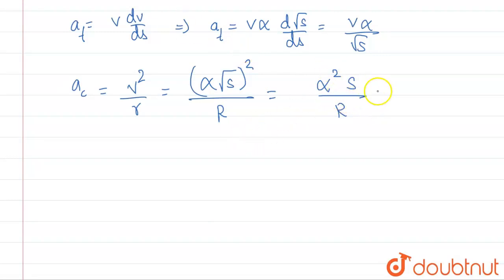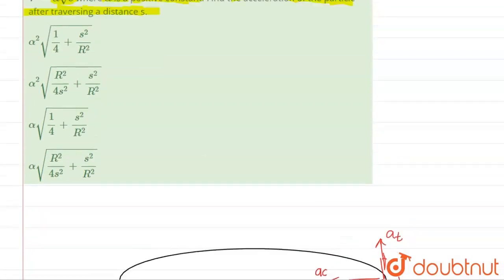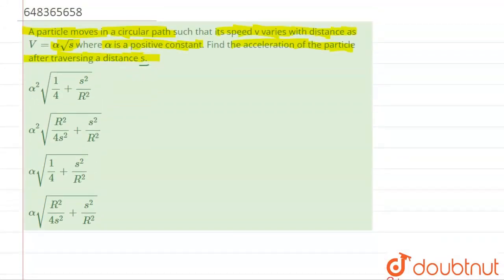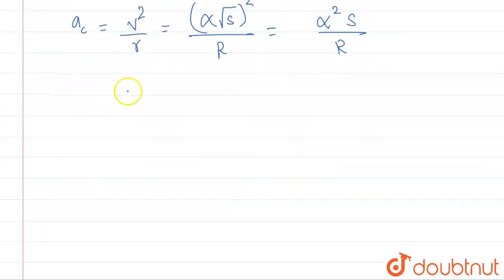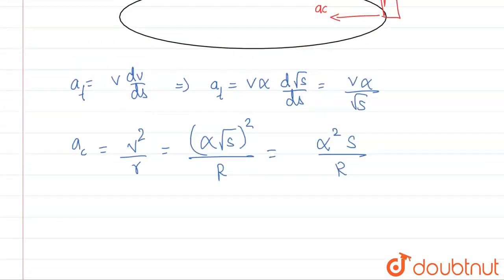One thing we don't have is the velocity after distance s. If we use this formula, v equals alpha root s, we can do it. How? We can just write a_t, tangential acceleration, equals v times alpha by root s.